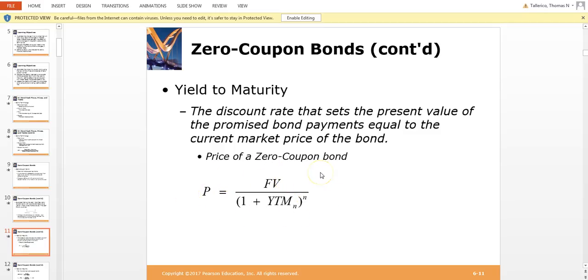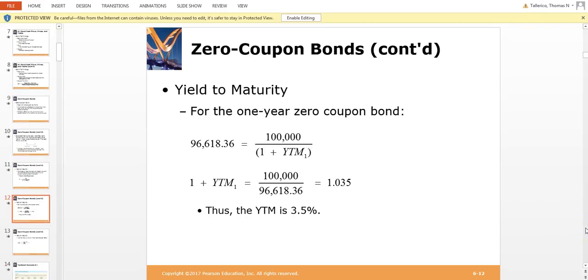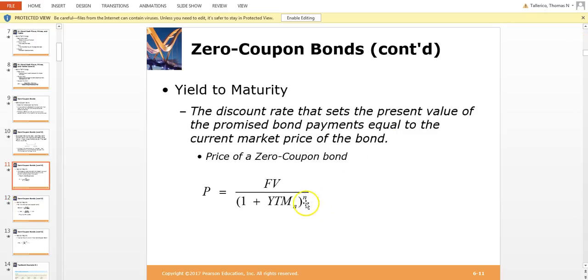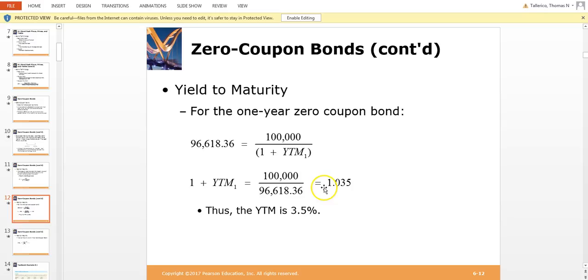And as usual, we're going to go to Excel. Here's one way to get a different solution for the equation I just showed you. Here's the yield to maturity, and if we solve for the yield to maturity for a one-year bond, you can see the yield to maturity is three and a half percent.